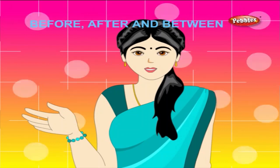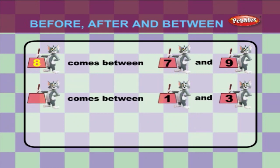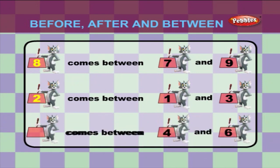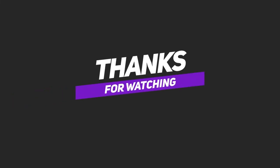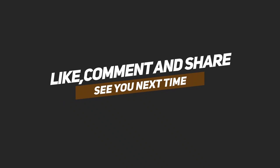Let us try some examples for between numbers. What comes between seven and nine? Eight. What comes between one and three? Two. What comes between four and six? Five.